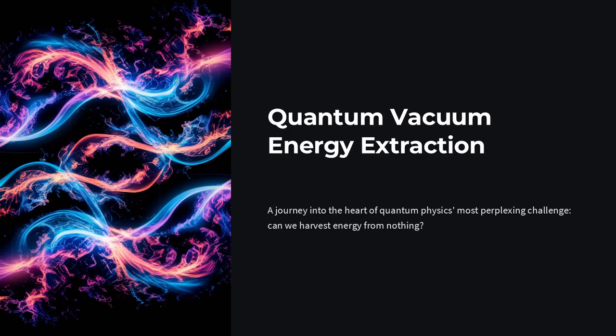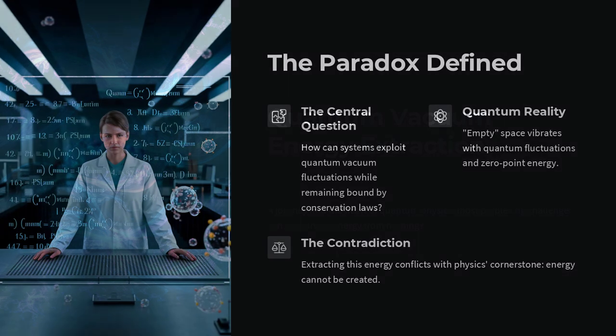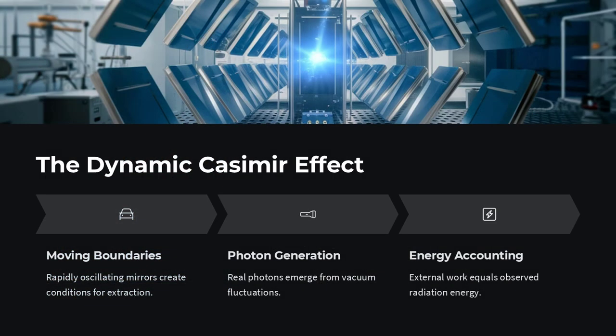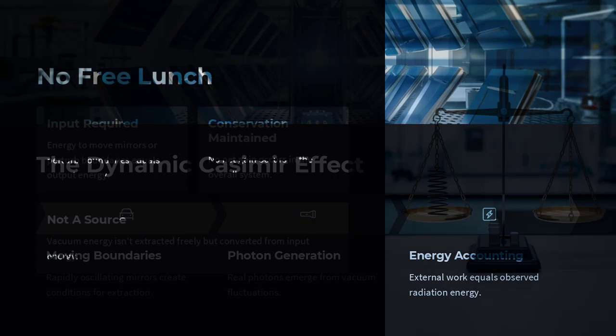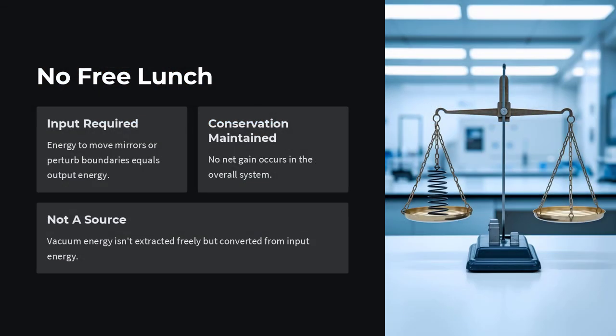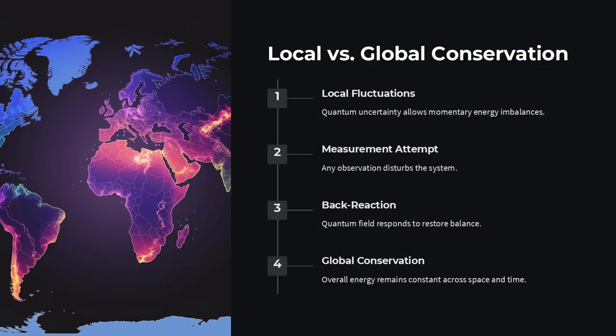How can systems exploit the incessant fluctuations of the quantum vacuum, an arena teeming with virtual particles and zero-point energy, yet remain bound by the rigid constraints of conservation laws? In theory, the vacuum of quantum field theory is a vast reservoir of energy, a stage where even empty space vibrates with quantum fluctuations. However, the process of extracting this energy confronts a profound paradox. Any attempt to harvest the vacuum's energy runs headlong into the immutable conservation laws that have been the cornerstone of physics for over a century.